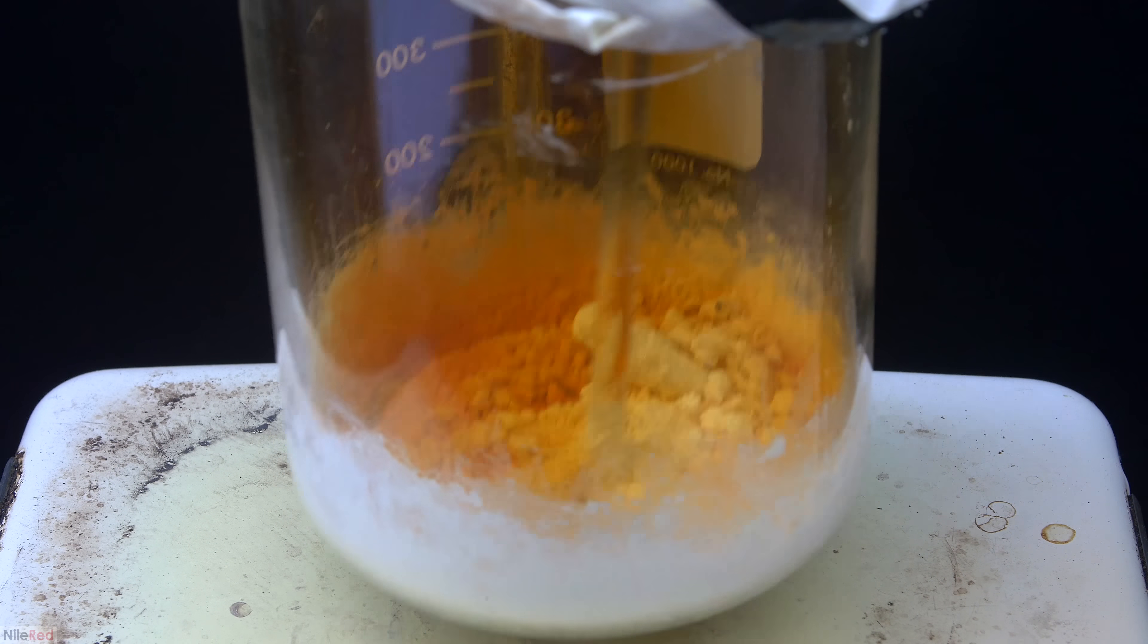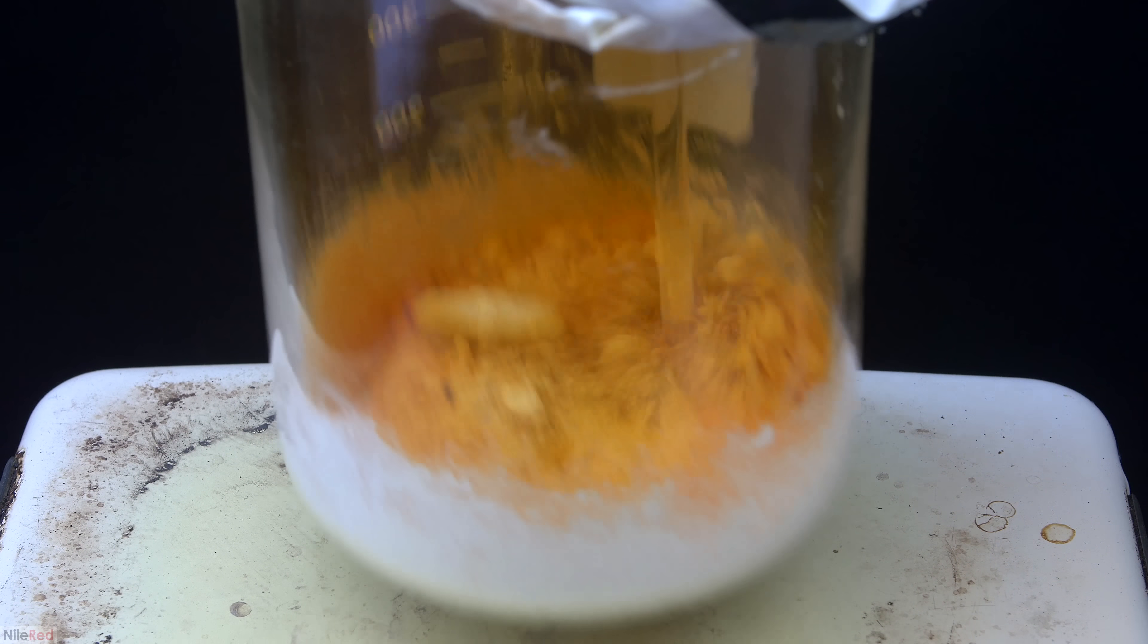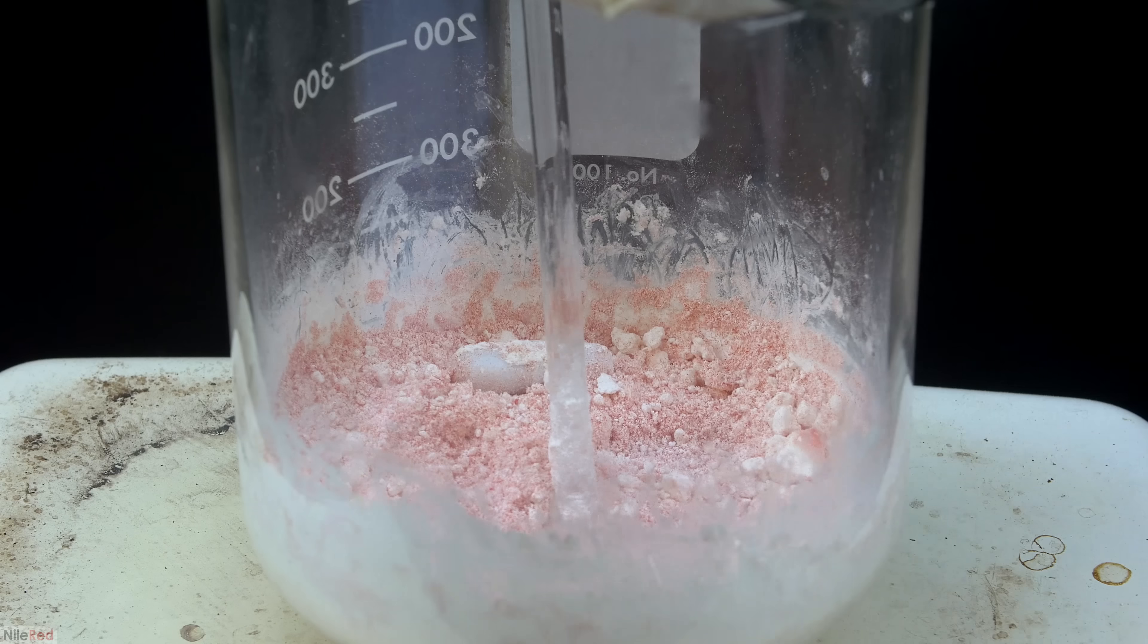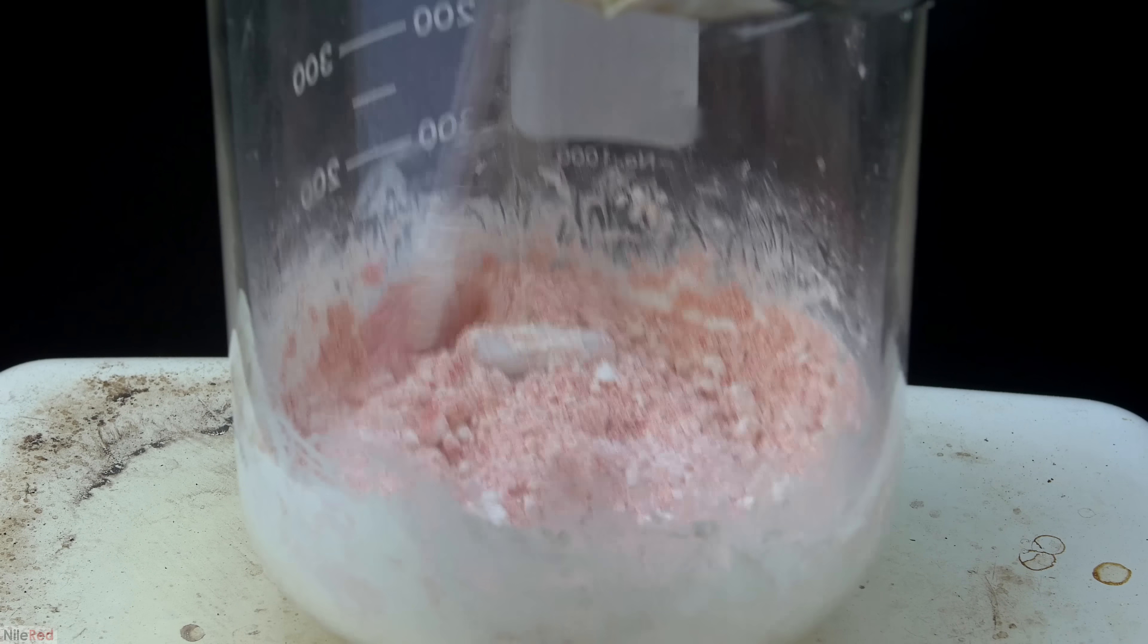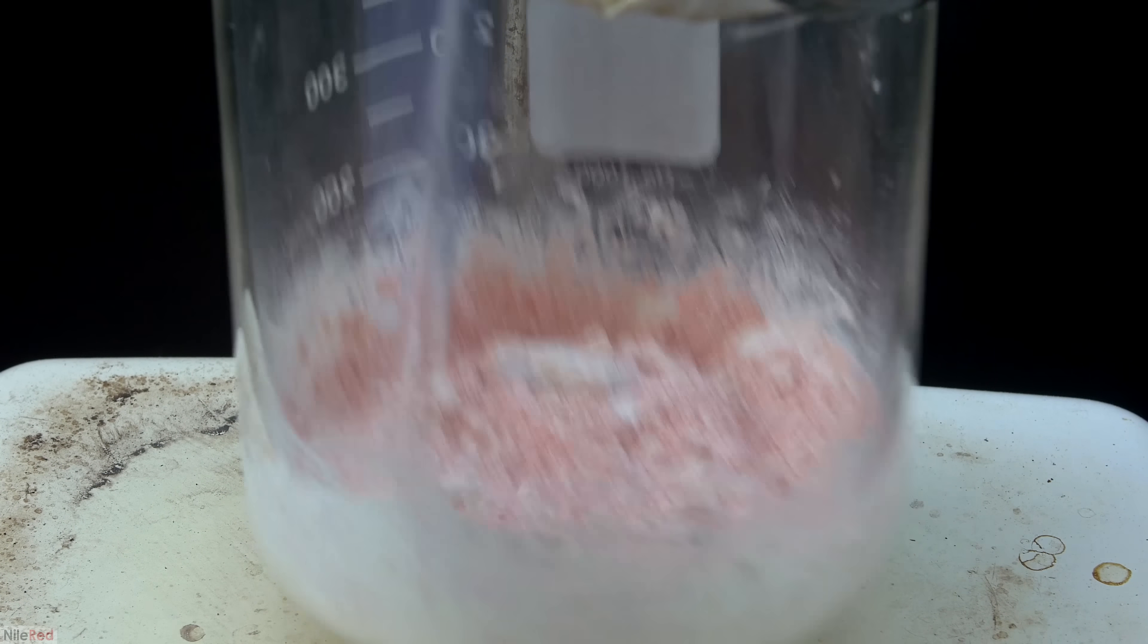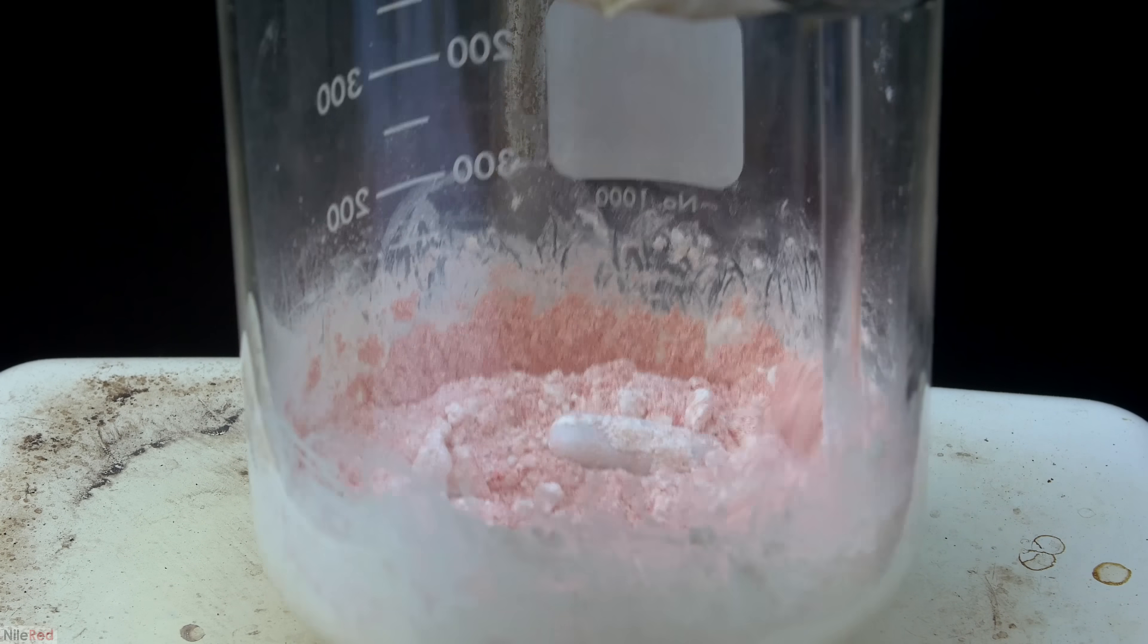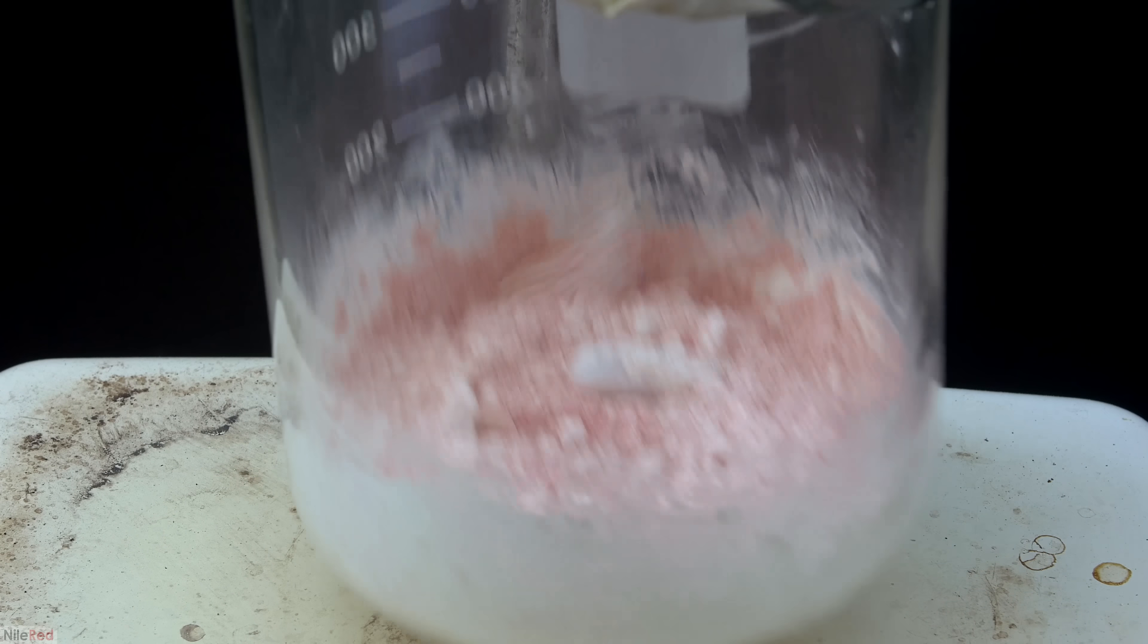So for this new method, I need aluminum isopropoxide, and to get that, I need mercuric chloride, and this is why I'm making it. Other than making the aluminum isopropoxide though, I don't have any real plans for the mercuric chloride. If you guys have any suggestions or cool ideas on how I could use the mercuric chloride, I'd love to hear it in the comments.